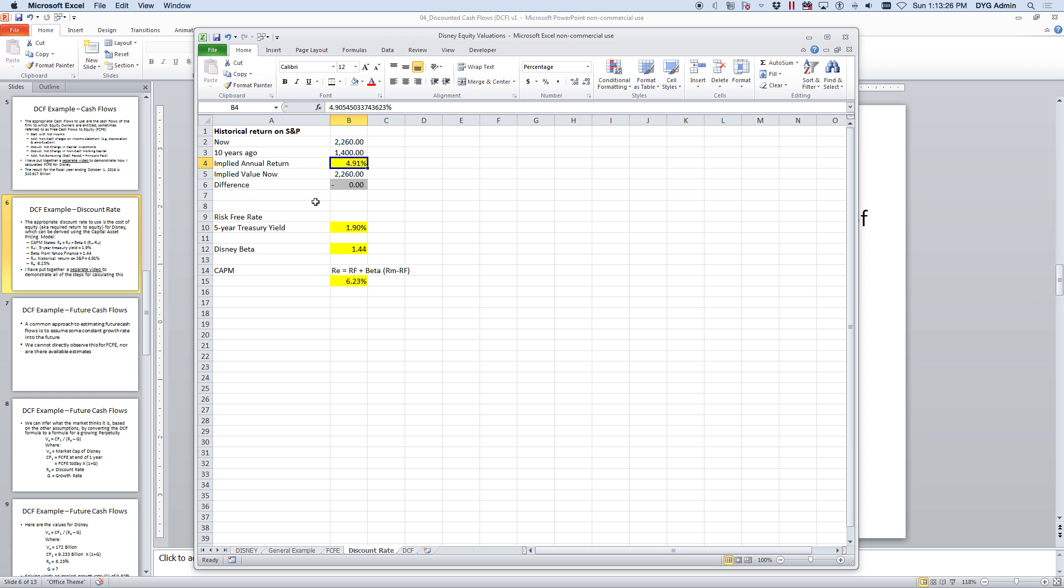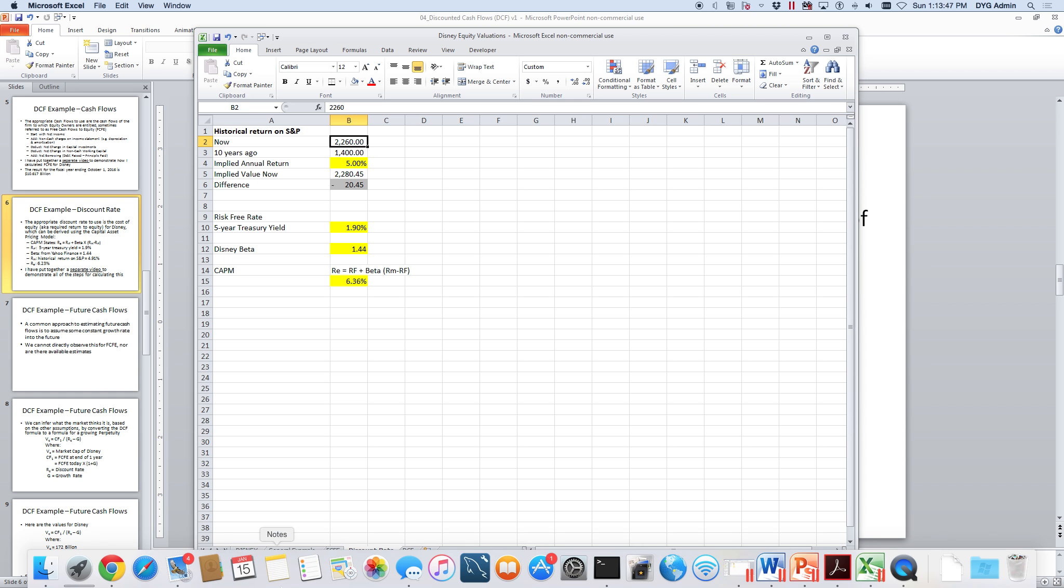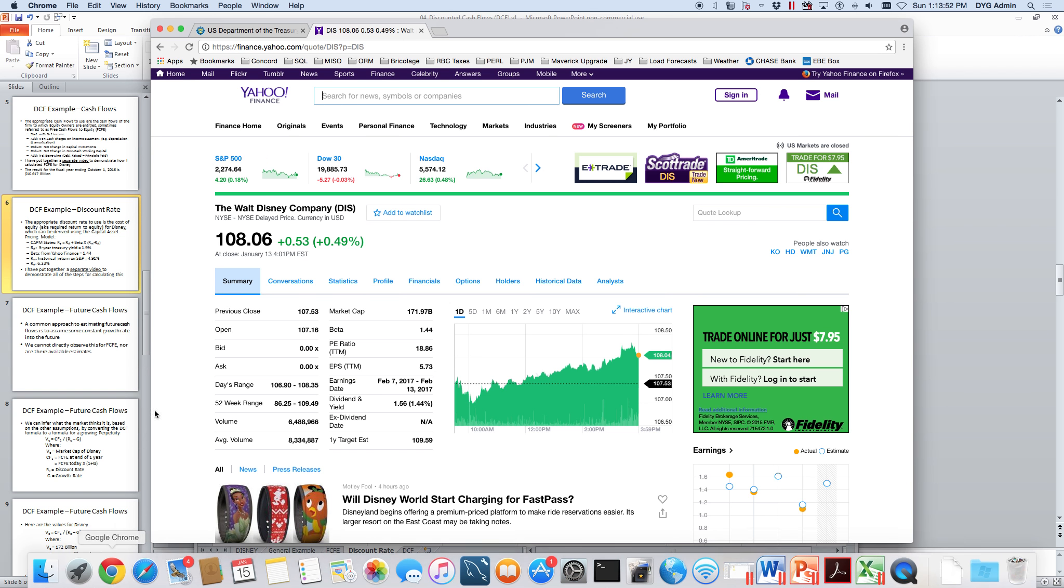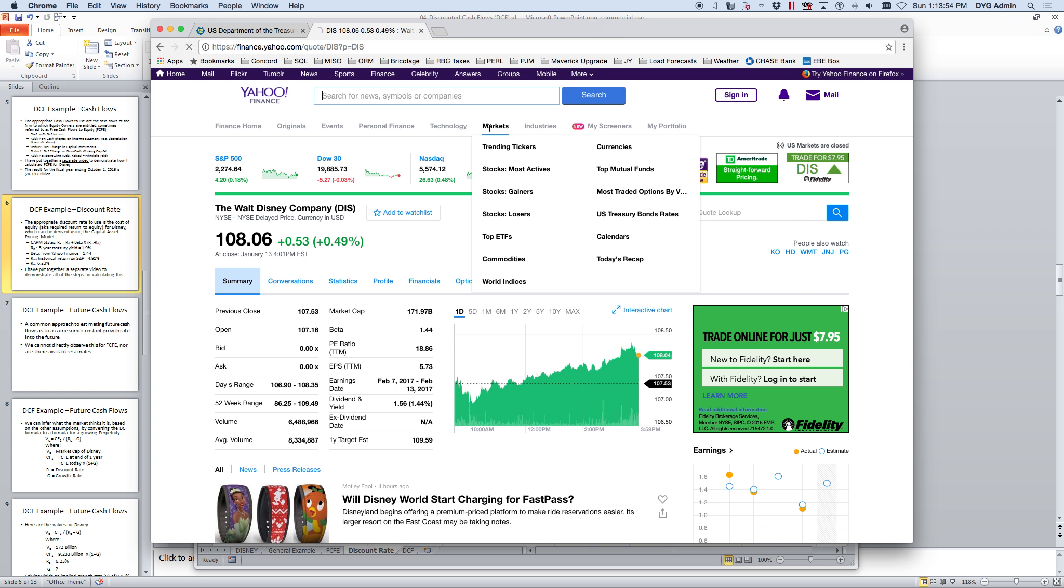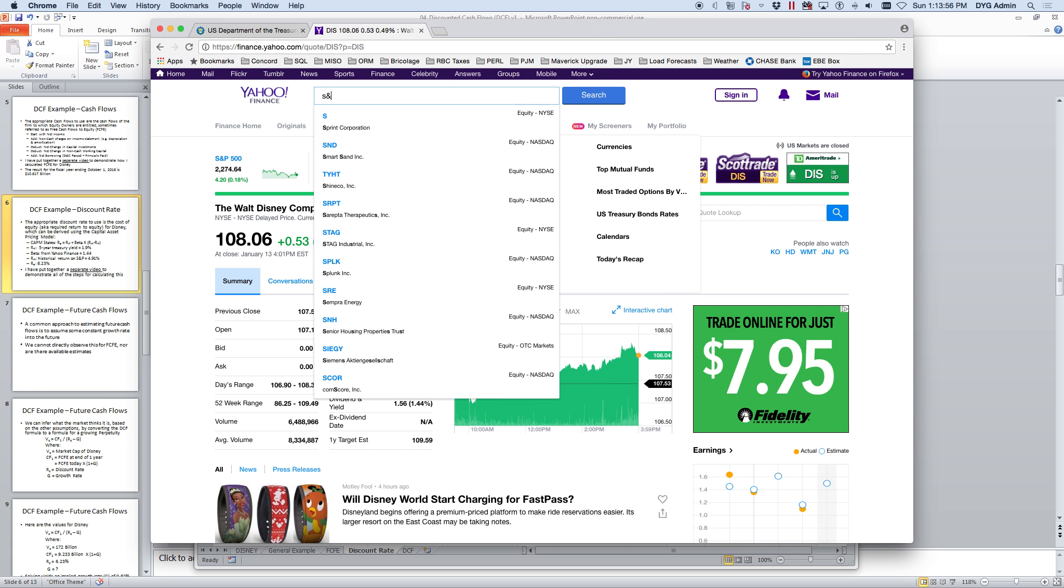What we're going to do is we're going to use the S&P 500. We're going to get what its value is currently, we're going to get what its value was 10 years ago, and we're simply going to solve for what growth rate would make that make sense. Simply put, if we were to take the value 10 years ago and grow it each year at some growth rate, then if we have the right growth rate, we'll wind up at the end of 10 years with today's value.